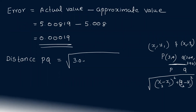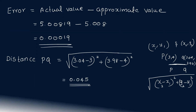Distance PQ = √((3.04 − 3)² + (3.98 − 4)²) = √(0.0016 + 0.0004) = 0.045.